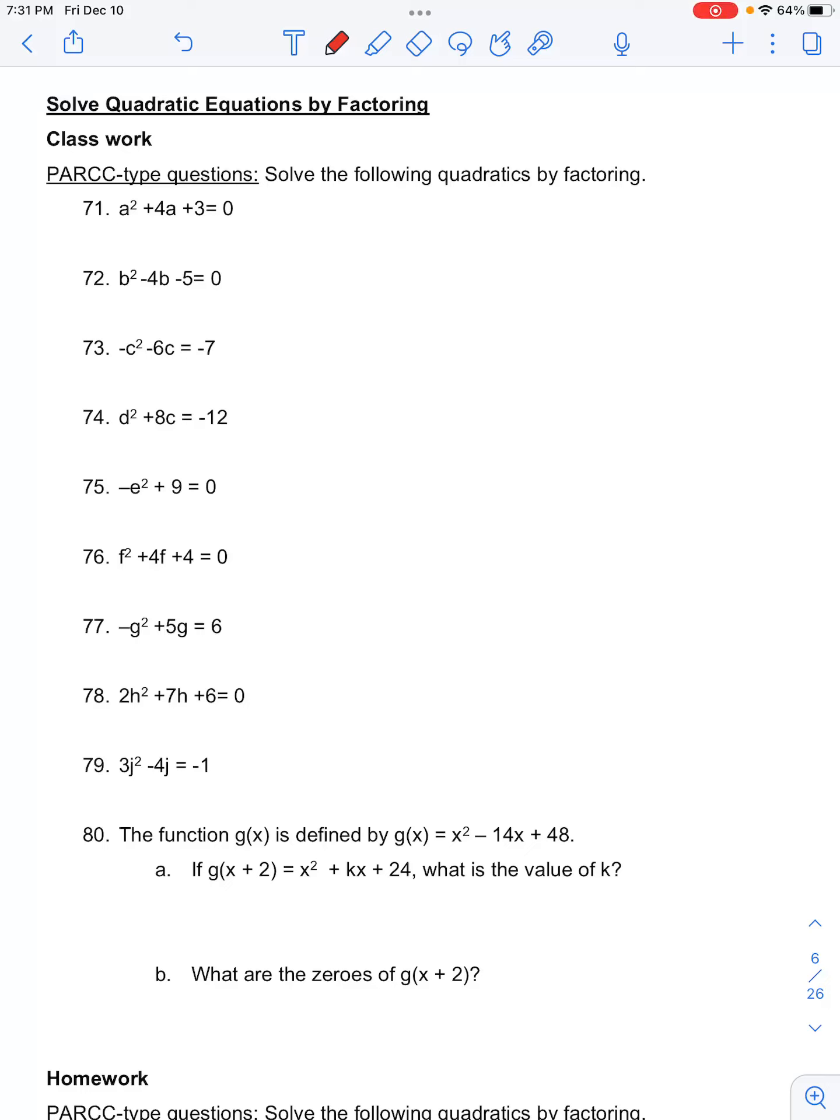Okay, number 72 in your classwork for quadratic equations asks you to solve the quadratics by factoring. So here we have b squared minus 4b minus 5, and this equals 0. So we don't have to move anything around.